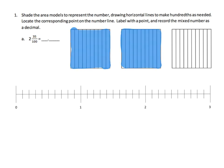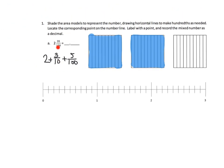Now we want to shade in 35 hundredths. Students need to understand that's going to be two wholes plus three tenths plus five hundredths. If they don't understand that right away, teachers can have them treat it as 35 hundredths and cut horizontal lines to shade in 35 individual tiny hundredths squares. But a more sophisticated approach is to shade in three tenths and then five hundredths.